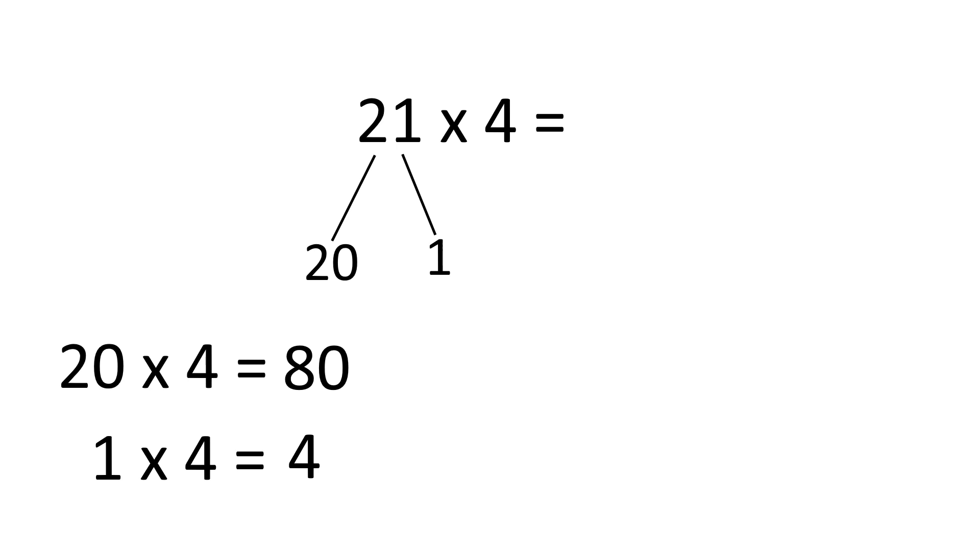Now, we must add these two parts together. 80 plus 4 is equal to 84. Therefore, 21 times 4 is equal to 84.